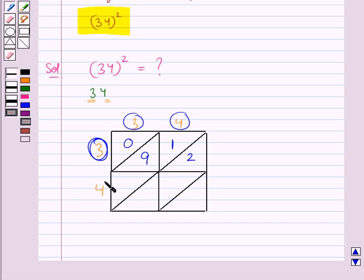In the same way we multiply this 4 with this 3. We get 12. We write 1 here and 2 here. Now 4 when multiplied with this 4 we get 16. So we write 1 here and 6 here.